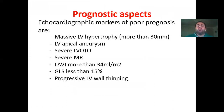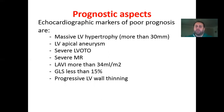What prognostic information does echo provide? Bad prognostic signs include: massive LV hypertrophy more than 30 mm, LV apical aneurysm, severe LVOT obstruction, severe mitral regurgitation, left atrial volume index more than 34 mL/m², global longitudinal strain less than 15 percent on speckle tracking echo, and the burnout phase with progressive LV wall thinning.